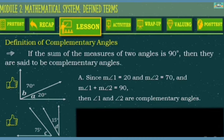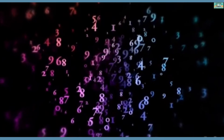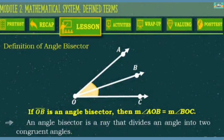How about number 2? The angle C and angle D are also complementary angles. We also have the angle bisector and the segment bisector. When do we say that a line or ray is an angle bisector? We can say that a line or ray is an angle bisector if it divides an angle into two equal parts. For example, we have angle AOC. If line segment OB is an angle bisector, then the measurement of angle AOB is equal to the measurement of angle BOC.